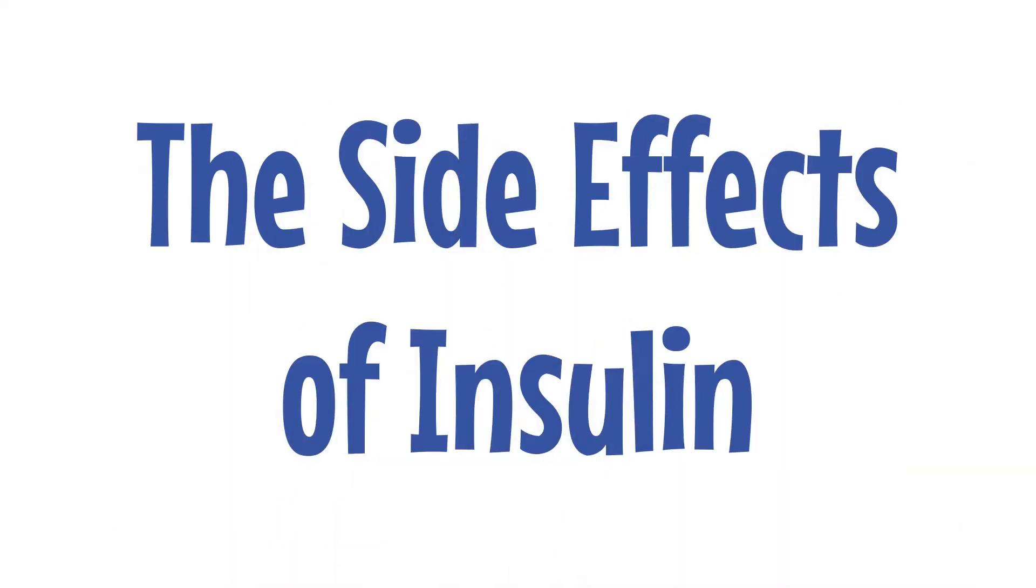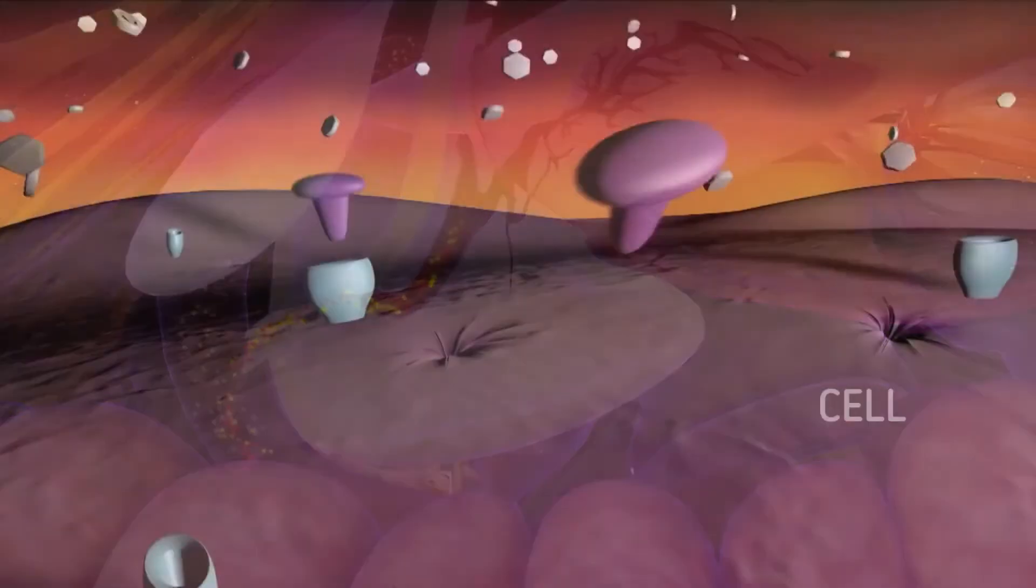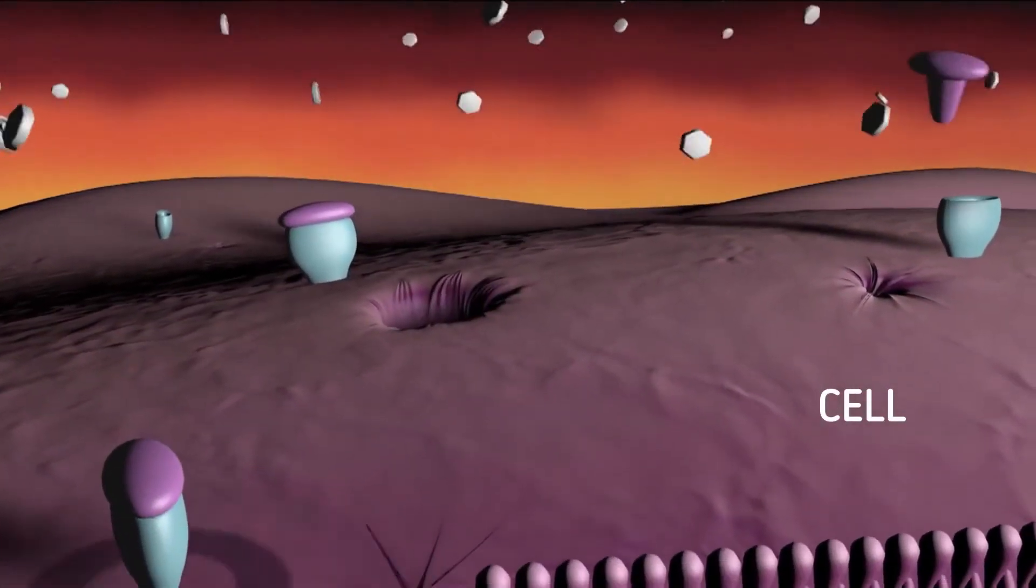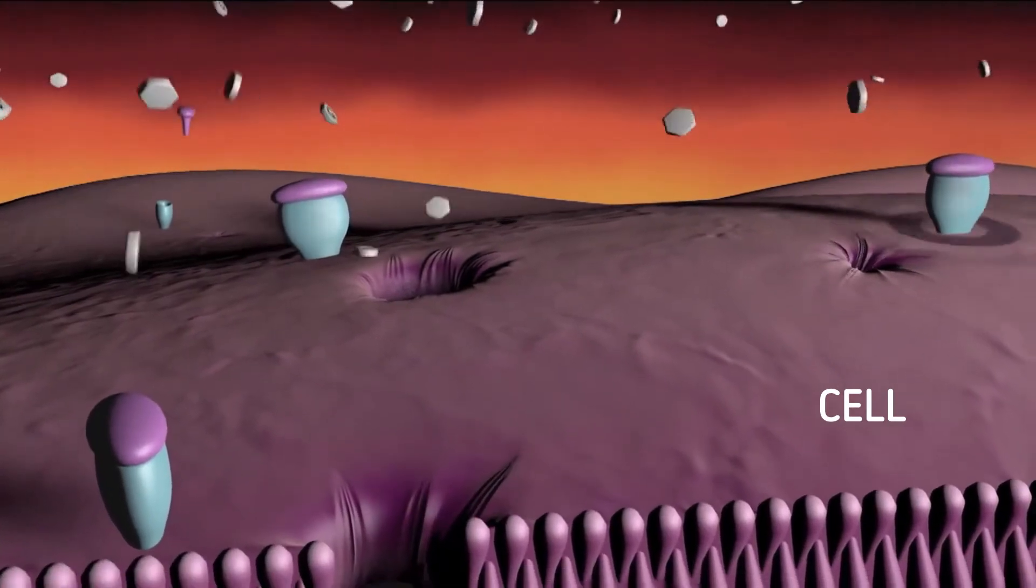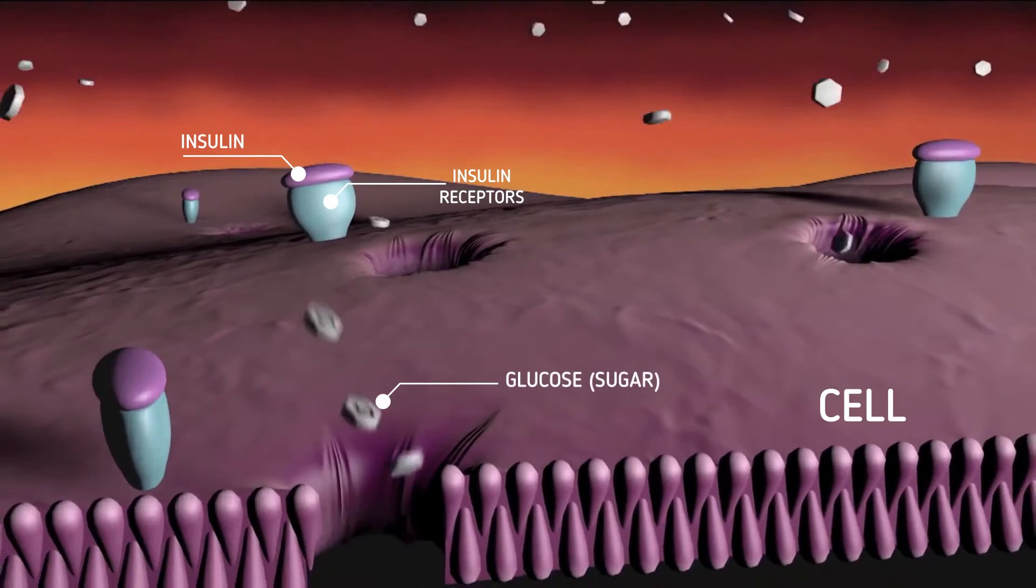The side effects of insulin. Your body creates insulin in your pancreas. Insulin is a hormone that enables the cells of your body to get the energy they need by absorbing sugar in the form of glucose from the bloodstream. Insulin is often referred to as the storage hormone, for good reason.